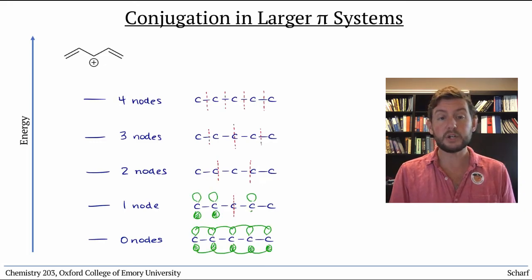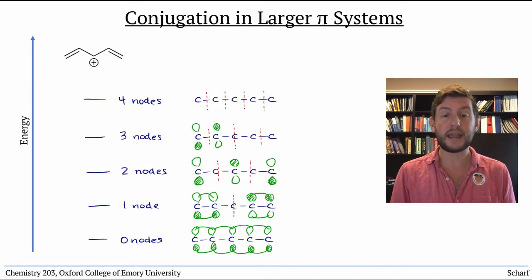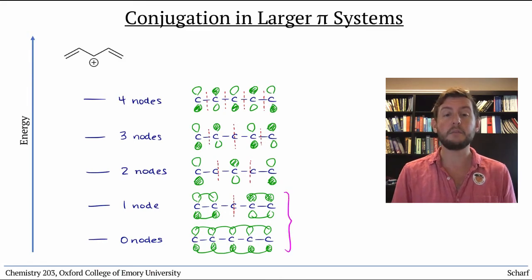The two lowest energy orbitals are bonding, the two highest energy orbitals are antibonding, and the one in the middle is nonbonding.